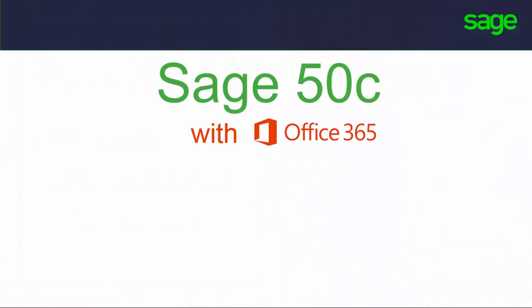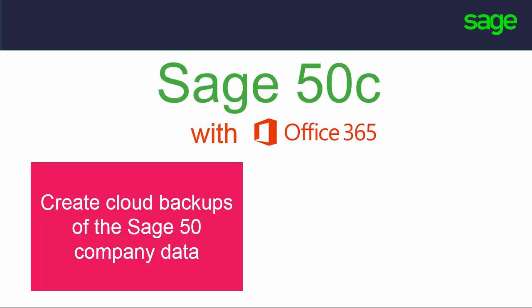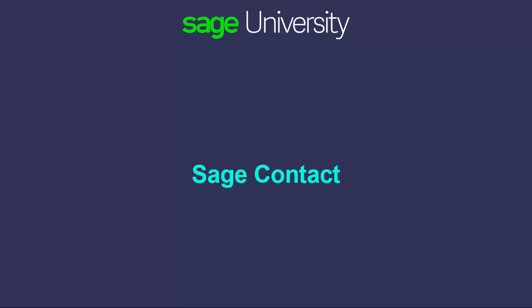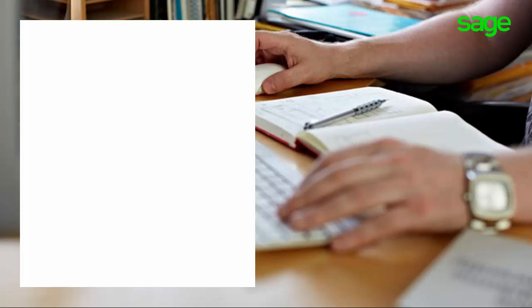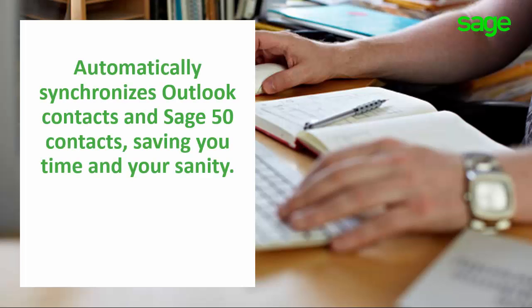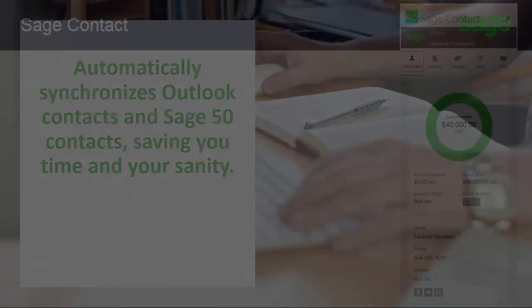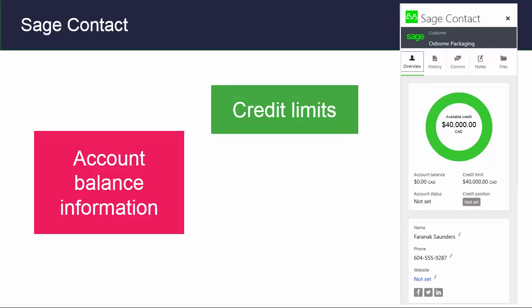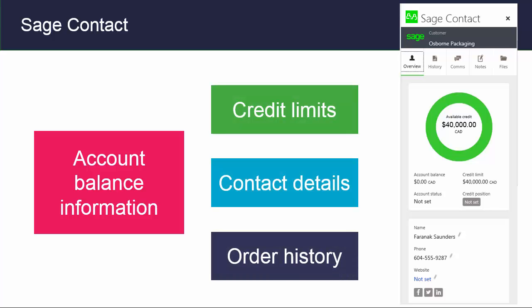Through the integration between Sage 50C and Office 365, you are able to create cloud backups of the Sage 50 company data and see customer and vendor financial information within Microsoft Outlook. The first feature available with the Office 365 integration is Sage Contact. This feature automatically synchronizes Outlook contacts and Sage 50 contacts, saving you time and your sanity. You can see customers' account balance information, credit limits, contact details, and other history from within your Outlook application.